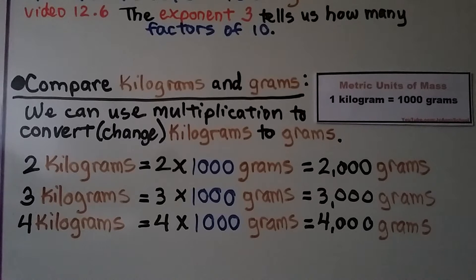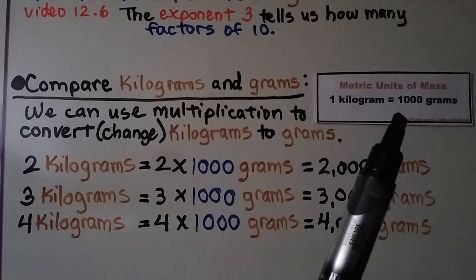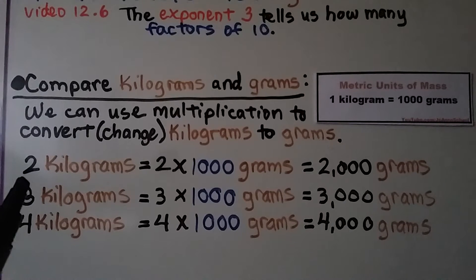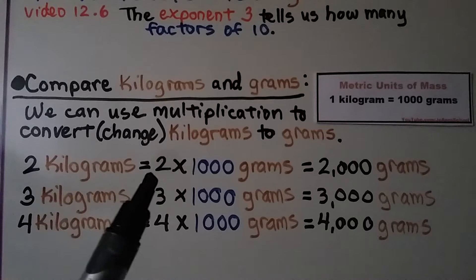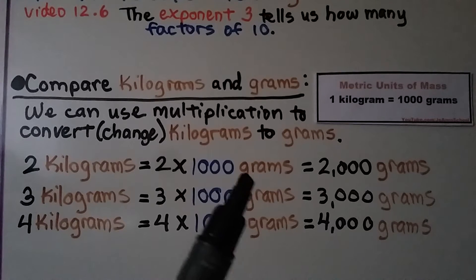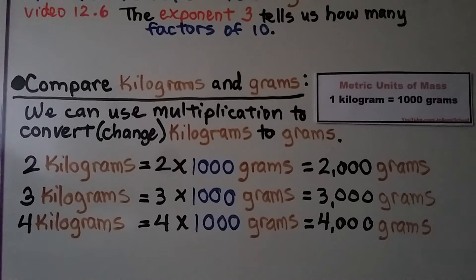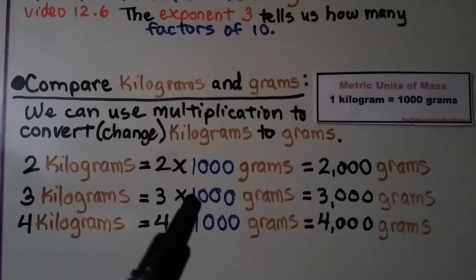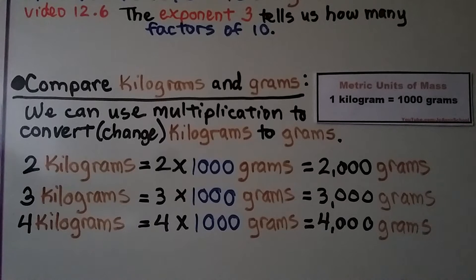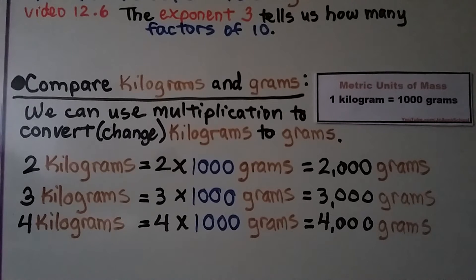Comparing kilograms and grams, we can use multiplication to convert kilograms to grams. One kilogram equals 1,000 grams. So two kilograms is 2 times 1,000, which is 2,000 grams. Three kilograms is 3,000 grams, and four kilograms is 4,000 grams.